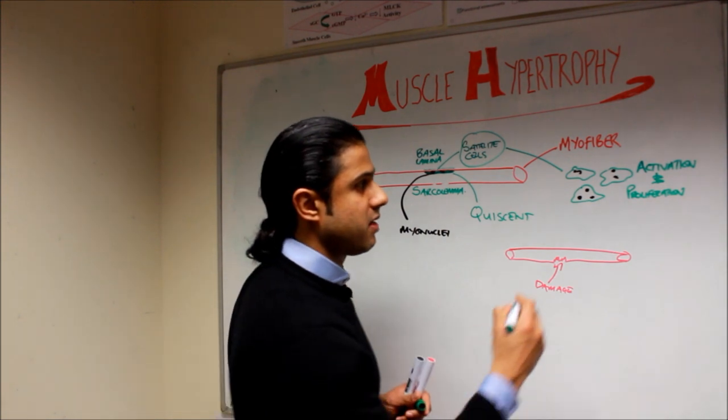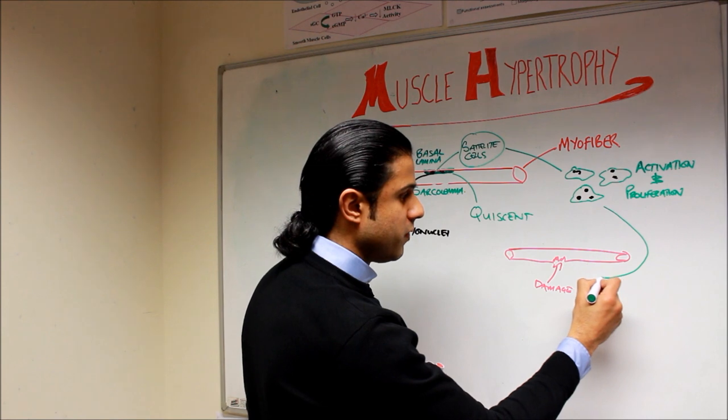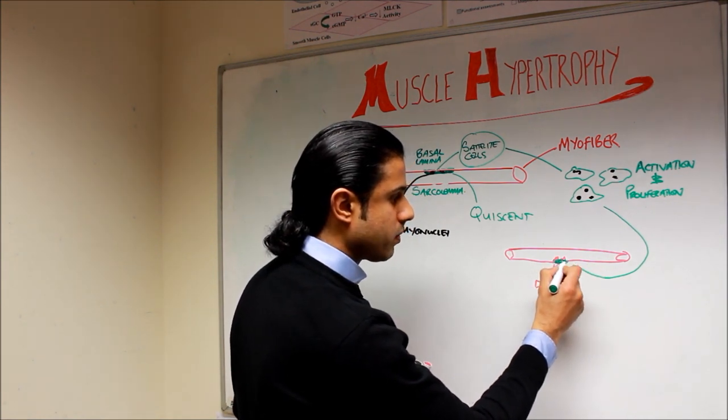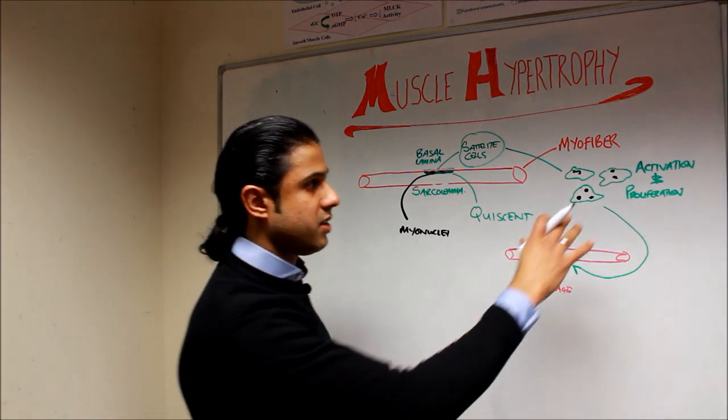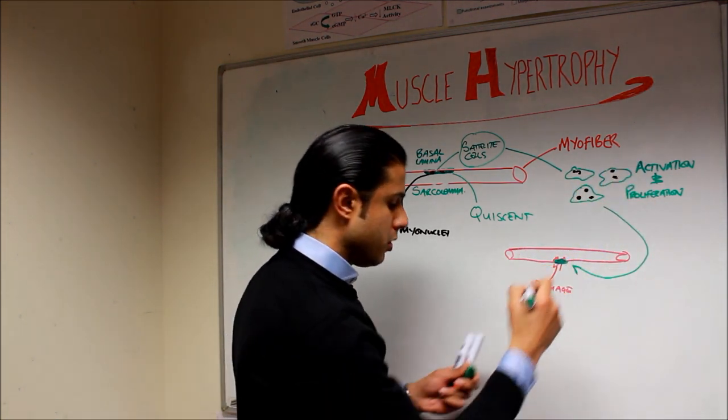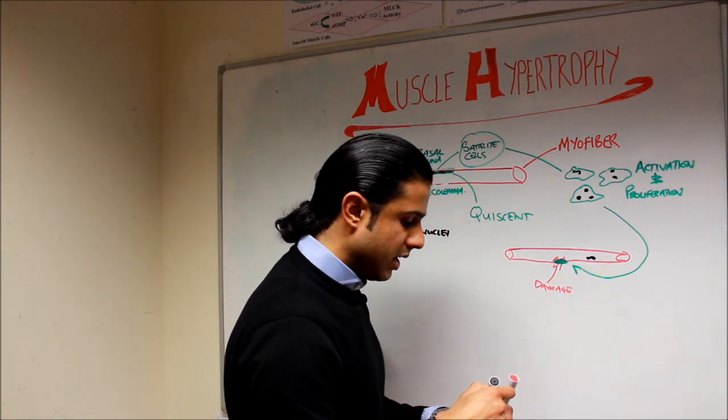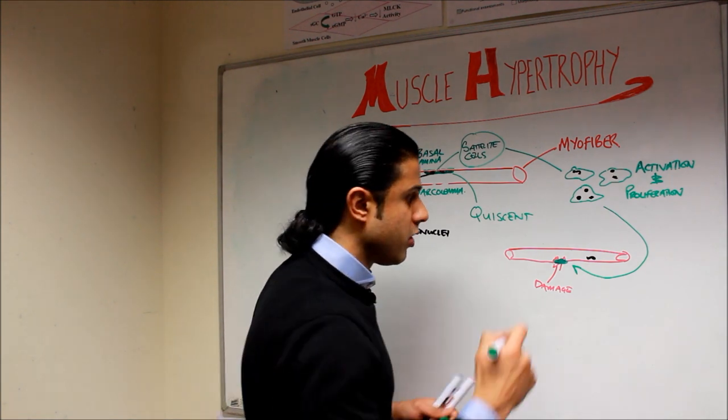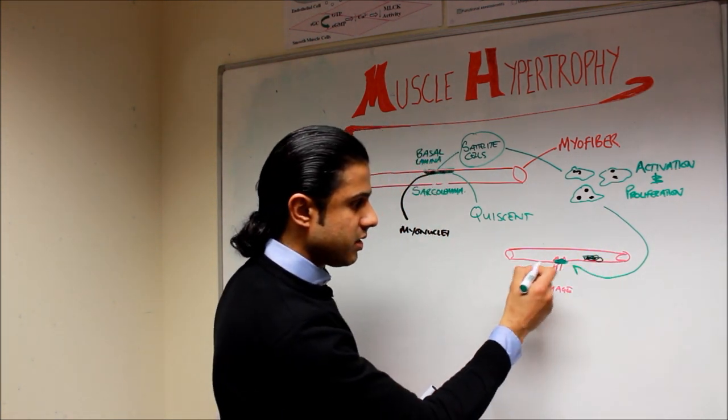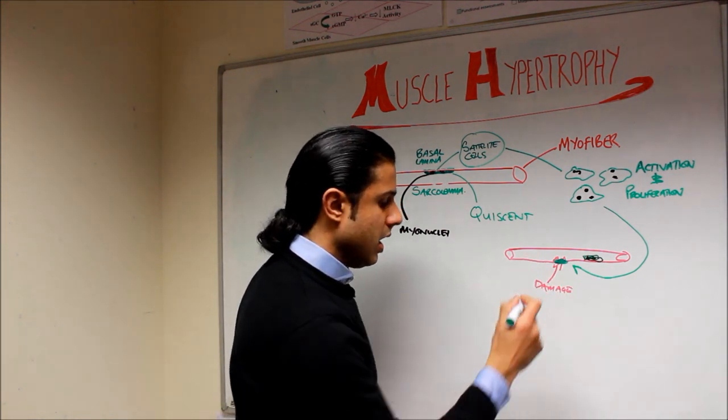What's going to happen next is we're going to have migration or chemotaxis of these satellite cells to the damaged site. The satellite cells are going to move to the area of damage, they're going to donate the myonuclei into the cell, and then they're going to cause the regeneration of that myofiber. This myofiber would then have more satellite cells added to it and the fiber will actually repair itself.